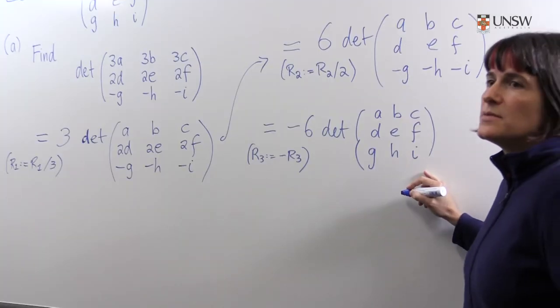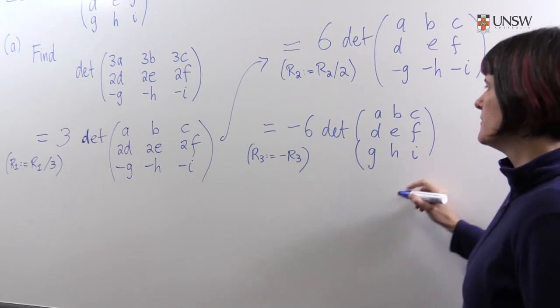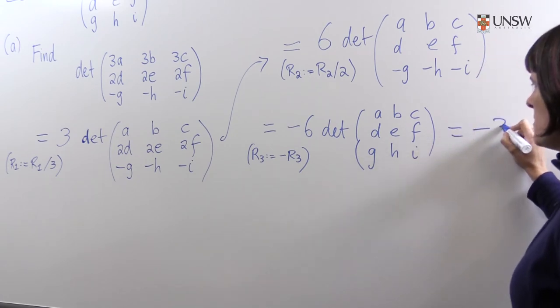And we recognize this matrix as A. We know its determinant is five. So we obtain the answer minus 30.